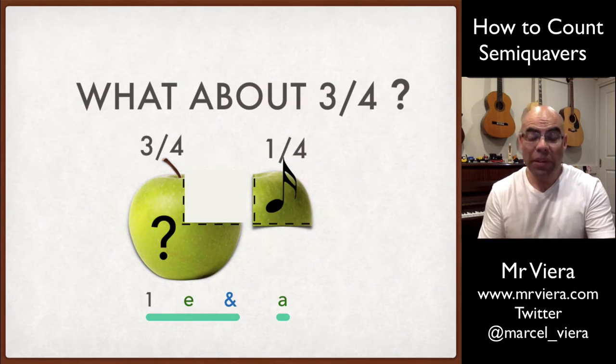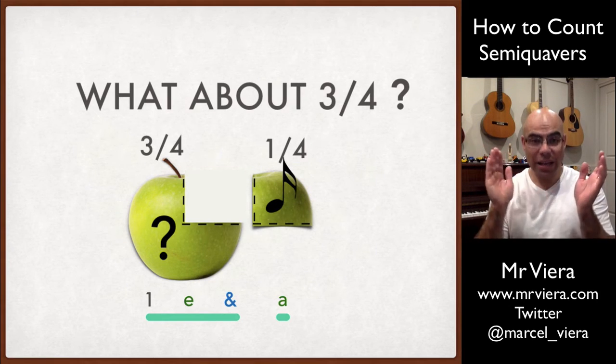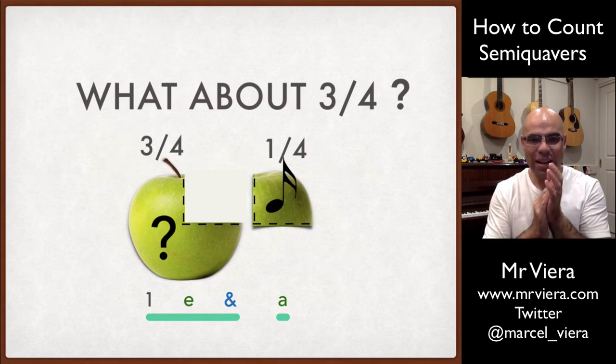Now, if we were to count it, it would go like this. One, E, and A. So one, E, and A.